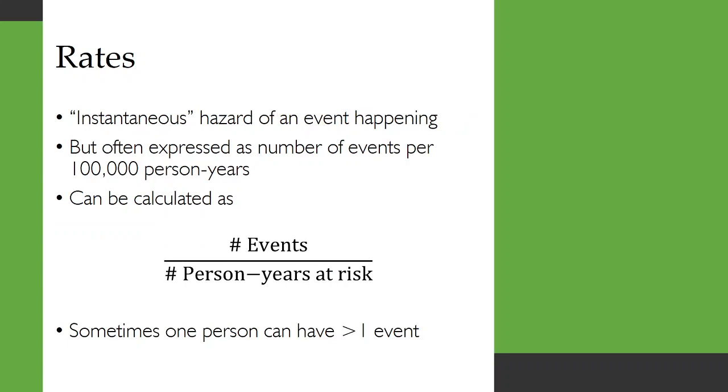Rates are a little bit different. They are the instantaneous hazard of an event happening, but they're often expressed as a number of events per 100,000 person-years. They can be calculated as the number of events divided by the number of person-years at risk. Sometimes one person can have more than one event, but sometimes only one event is possible, particularly if you're looking at something like mortality.